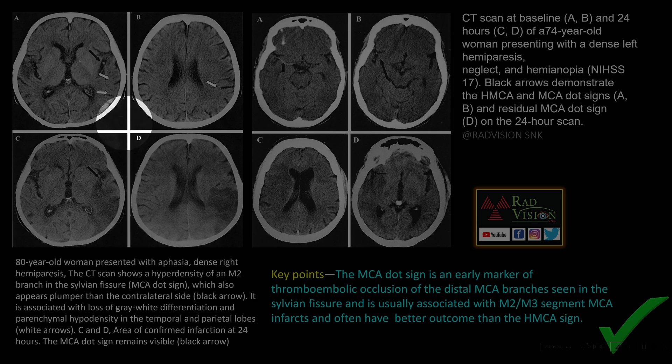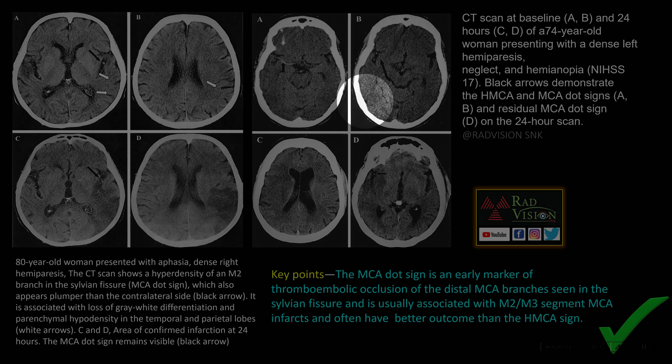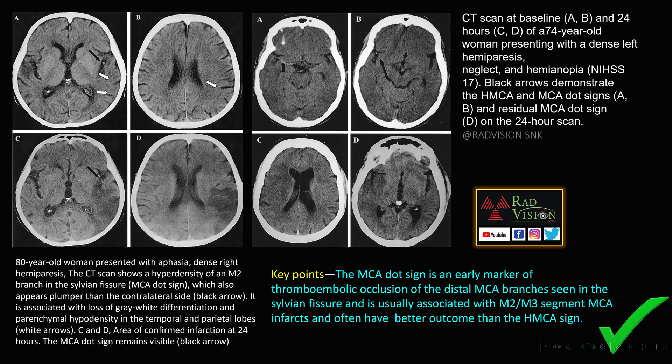Additional cases show the hyperintense MCA sign with M2 and M3 dot sign and corresponding infarcts. The MCA dot sign is an early marker of thromboembolic occlusion of the distal MCA branches, usually associated with infarcts in M2 and M3 segments, and often has a better outcome than the hyperdense MCA sign. When you see this sign, also repeat the scan after 24 hours as evolving infarcts may develop.